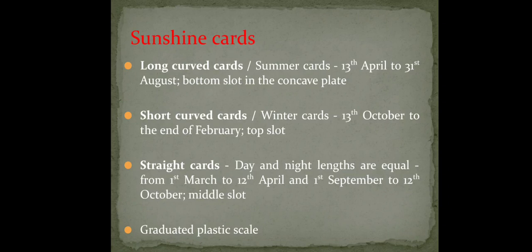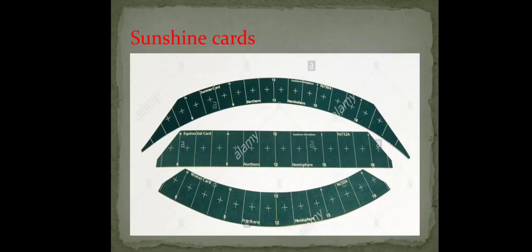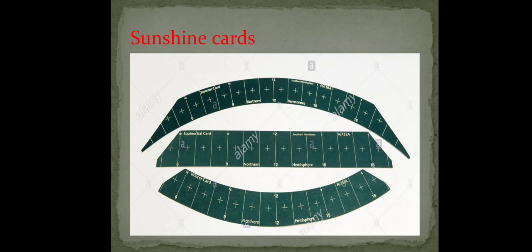There will also be a graduated plastic scale to measure exactly in decimal hours. The three sunshine cards are: long curve card, straight card, and short curve card. Looking at the length, the long curve card is slightly longer than the short curve card, but when cut at the 6 pm mark both will be equal in length. So by length alone you will not be able to identify long curve versus short curve.